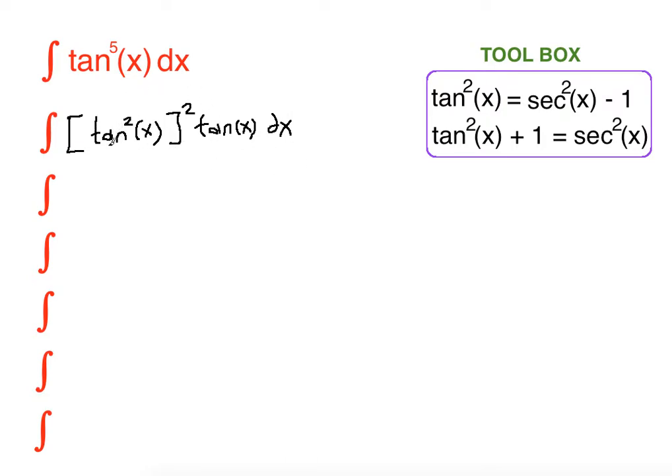We have four factors of tangent here and one factor of tangent here, together tangent fifth of x. Now we are going to substitute our identity. So instead of tangent squared of x we are going to write secant squared of x minus 1 squared times tangent x dx.